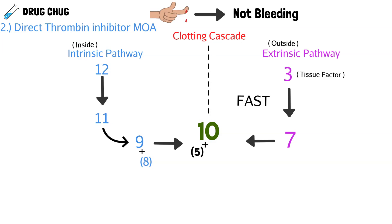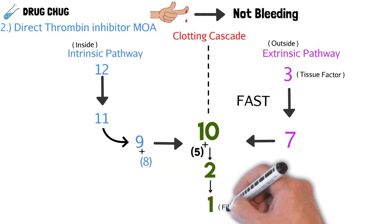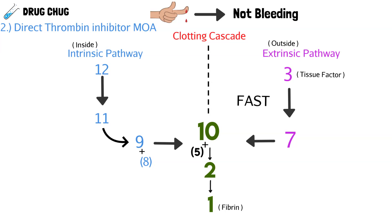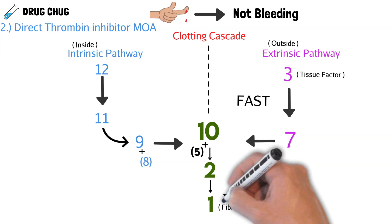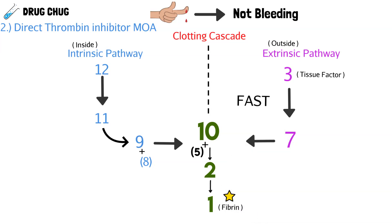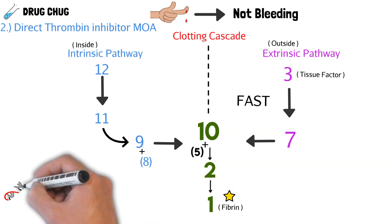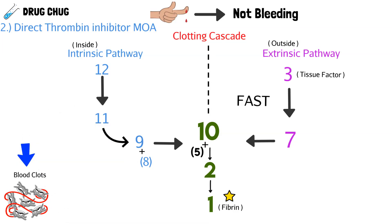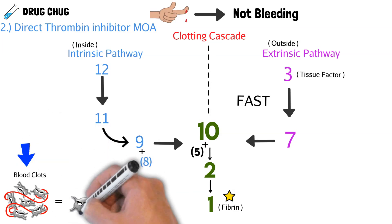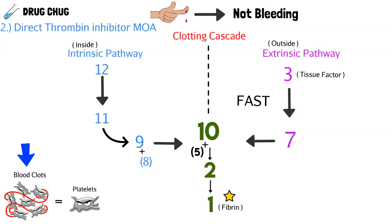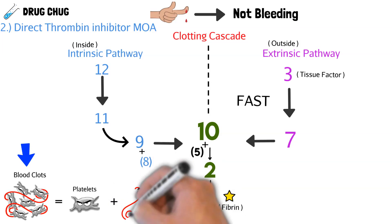In the common pathway, clotting factor 10 activates clotting factor 2, which then activates clotting factor 1. Clotting factor 1 is fibrin, and fibrin is the whole point of the clotting cascade — we need fibrin to make blood clots. Blood clots are made up of platelets circulating in our blood plus fibrin.